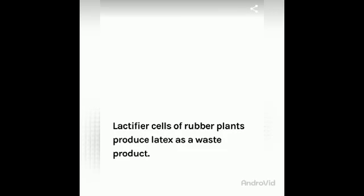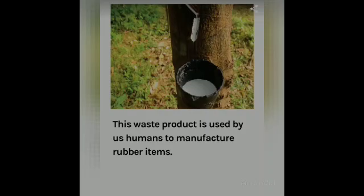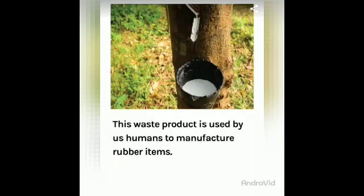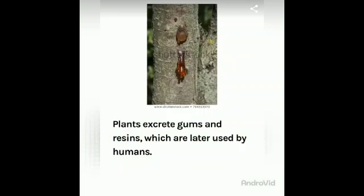Cells of rubber plants produce latex as a waste product. This waste product is used by humans to manufacture rubber items. Here you can see the picture showing the waste product being released from the plant and collected by humans for the manufacturing of rubber items. Plants also excrete gums and resins. Here you can see in the picture that gum is coming out from the tree bark. These gums and resins are later used by humans.